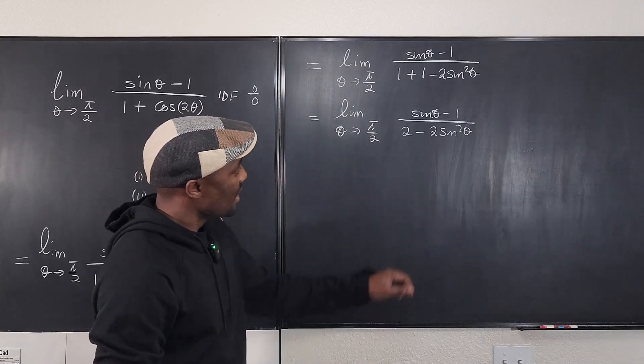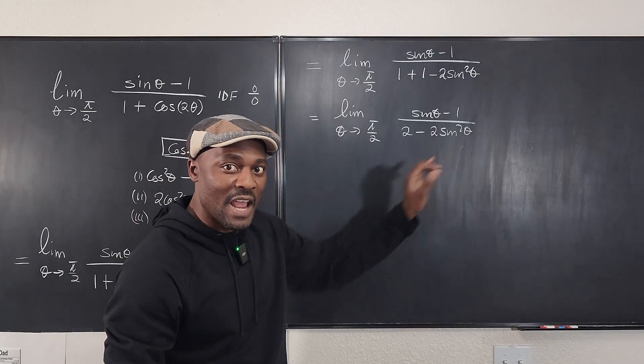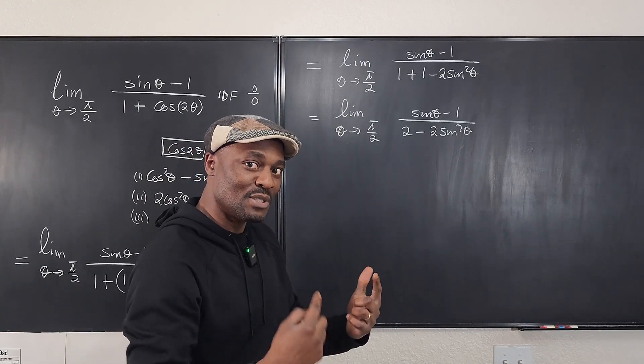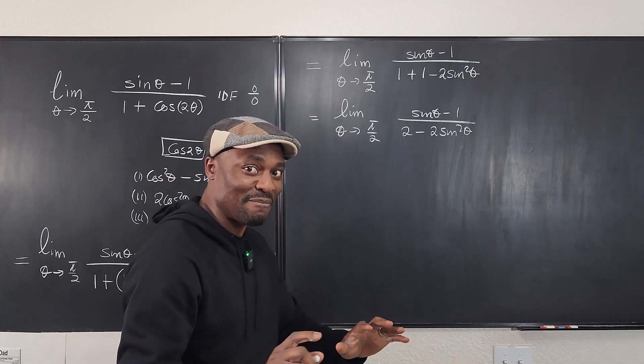Okay, I can factor out this 2, and then I'm going to end up with 1 minus sin²θ, and I know that 1 minus sin²θ gives me a difference of two squares that's going to give me 1 minus sinθ, 1 plus sinθ, and I'm done.